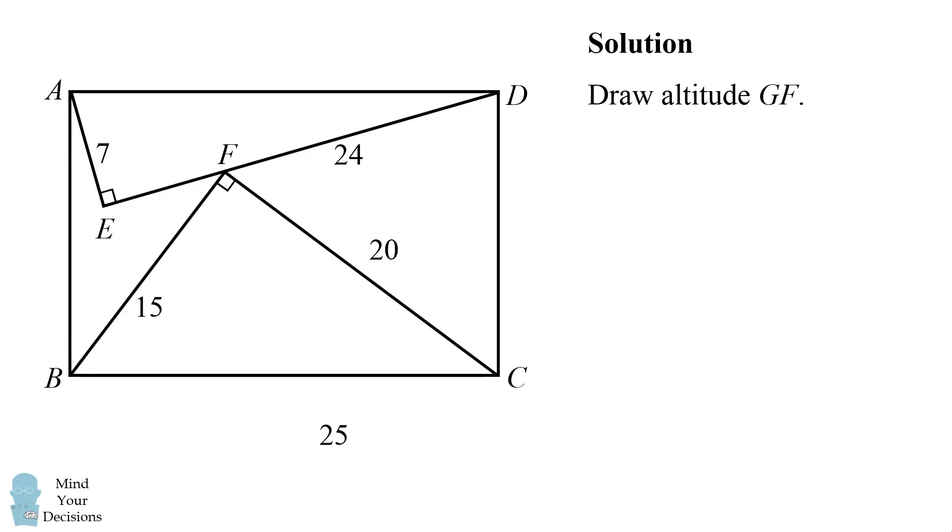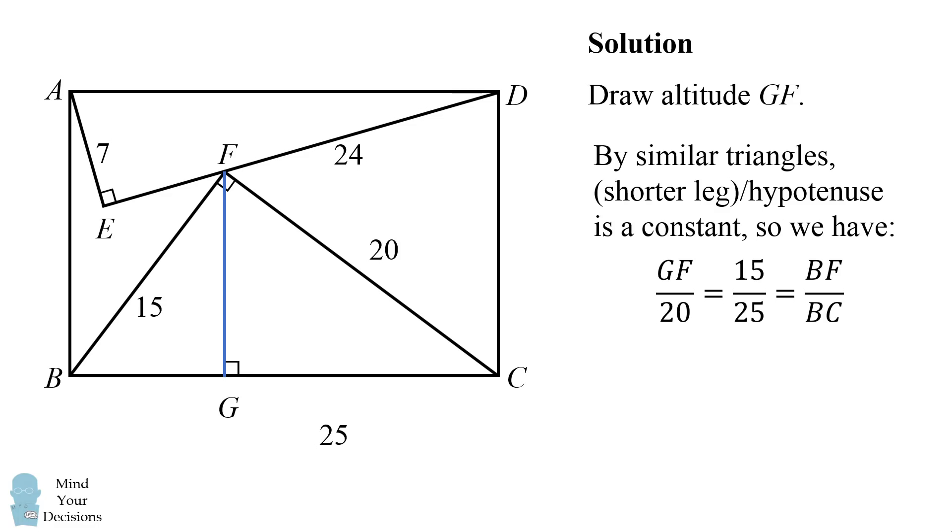Now, we'll draw altitude GF in triangle BFC. By similar triangles, the ratio of the shorter leg of this right triangle to the hypotenuse is a constant. So we have the following ratios. The altitude GF to the hypotenuse of 20 is equal to the shorter leg of 15 in the larger triangle to the hypotenuse of 25. In other words, in this smaller triangle, we have GF to its hypotenuse of 20 is equal to, in this larger triangle, the shorter side of 15 to the hypotenuse of 25. So we can then solve that GF is equal to 12.